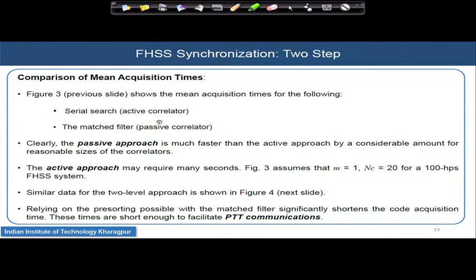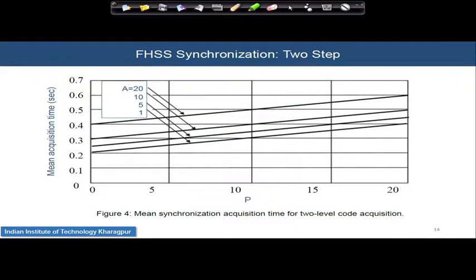Comparing serial search and match filter based acquisition times, we prefer the passive approach when acquisition time is the priority. For the two-level approach in PTT communications: with A equal to 20 tones remaining for serial search, or 10, 5, or 1 — if P is fixed, as the number of tones left for serial search increases, acquisition time also increases.